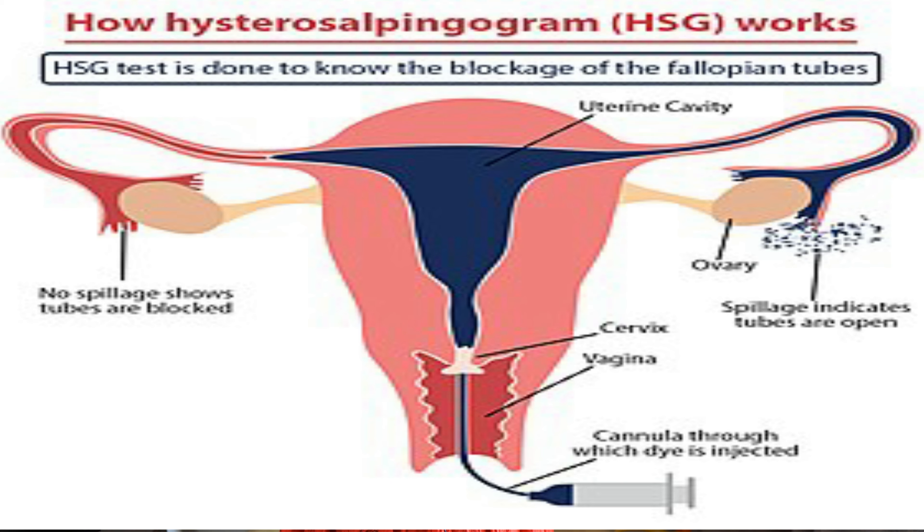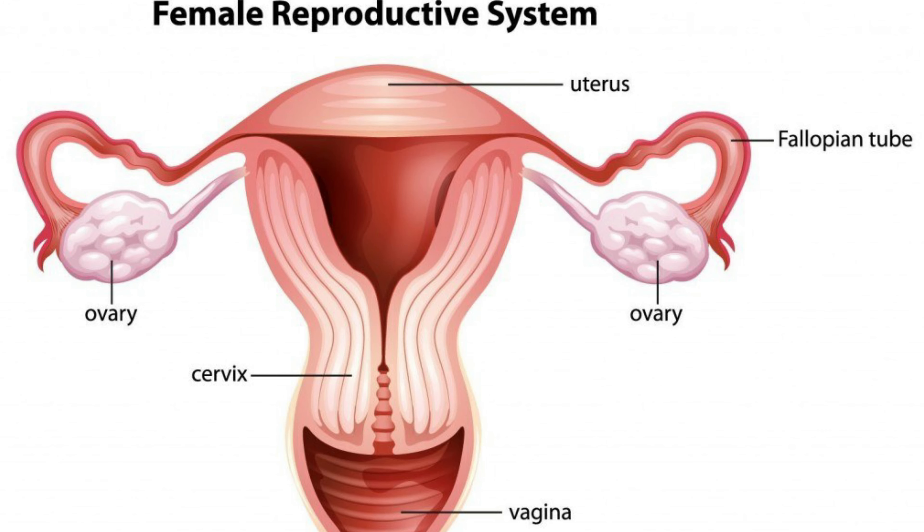This test takes about 15 to 25 minutes. Let's talk about the HSG test. First, you go into the X-ray room. A speculum is inserted to open the cervical area. A catheter is passed through to insert dye, and the dye is pumped through the uterus into the fallopian tubes.